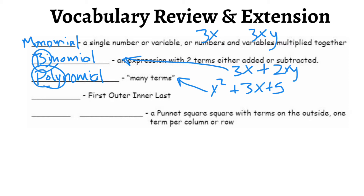FOIL method is actually an acronym that stands for First, Outside, Inside, Last. So: First, Outside, Inside, and Last. I'll explain what these words mean in a little bit.